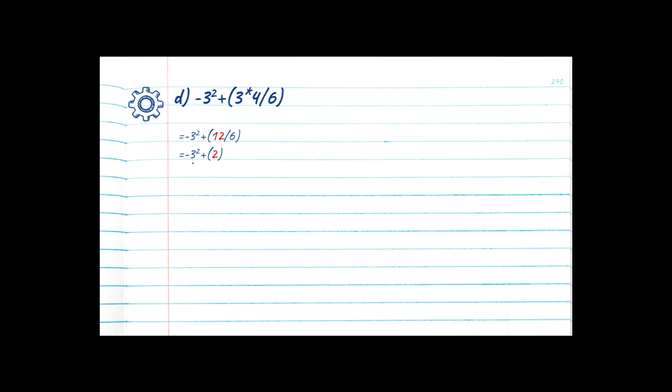Now that we've solved that bracket, we step out. There are no more brackets, so we look for exponents. We have minus 3 to the power of 2 — another exponent. Our base is negative 3, so we grab the sign and multiply negative 3 by itself twice: negative 3 times negative 3. A negative times a negative gives a positive, and 3 times 3 is 9. Drop the rest. Now we clean up our lines — the brackets were just for legibility. 9 plus 2 is equal to 11, and our final answer is 11.